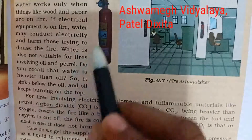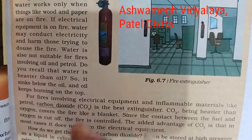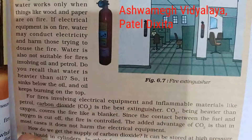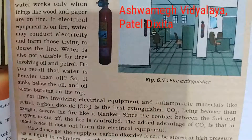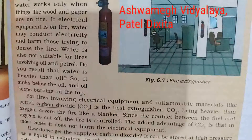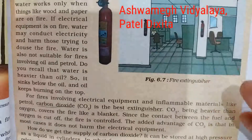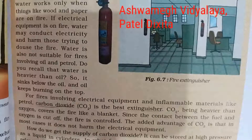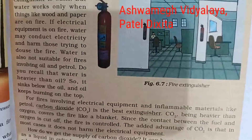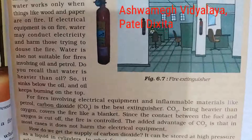These cylinders are also labeled A, B, C — indicating whether they contain water or carbon dioxide. This tells you which cylinder you can apply to which type of fire.